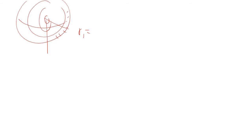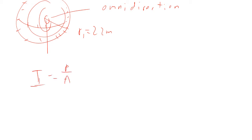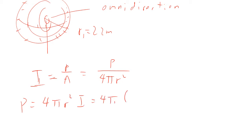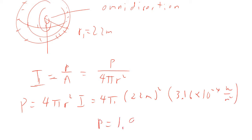The sound is spread out on the surface of a sphere of radius R1, since we assume the speaker is omnidirectional — it gives off sound in all directions. Intensity equals power over area, and the area of a sphere is 4πr² (not 4/3 πr³, which is volume). So power = 4πr²·I = 4π × (22 m)² × 3.16 × 10⁻⁴ W/m² = 1.92 watts.